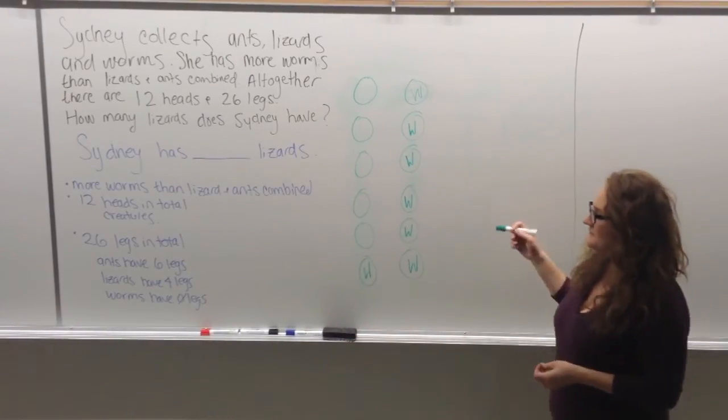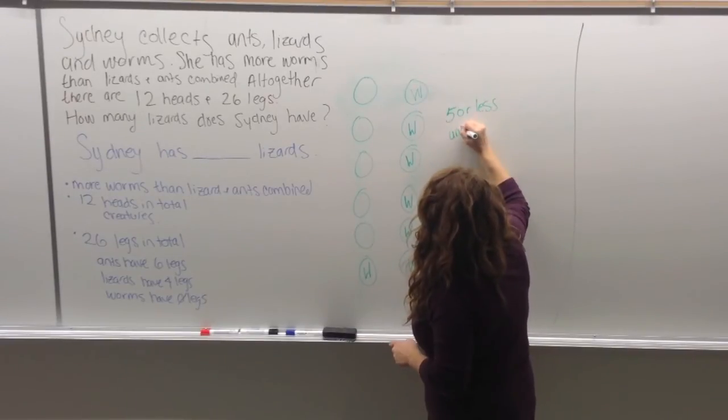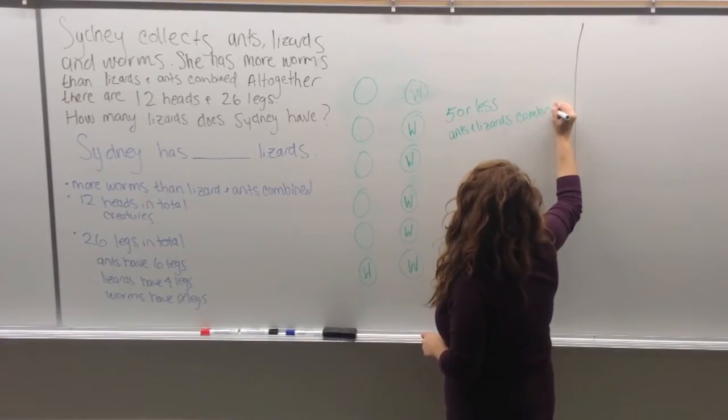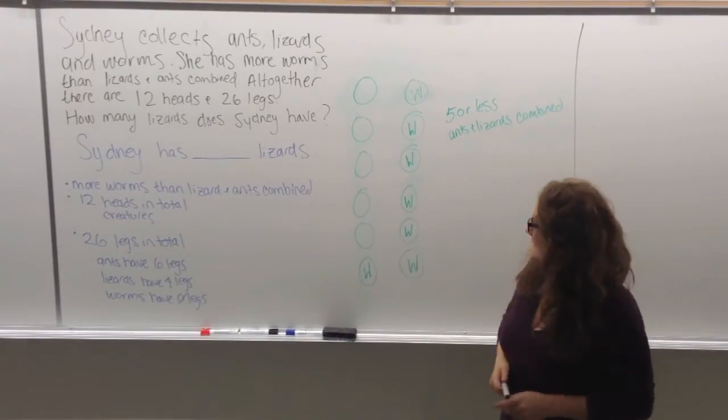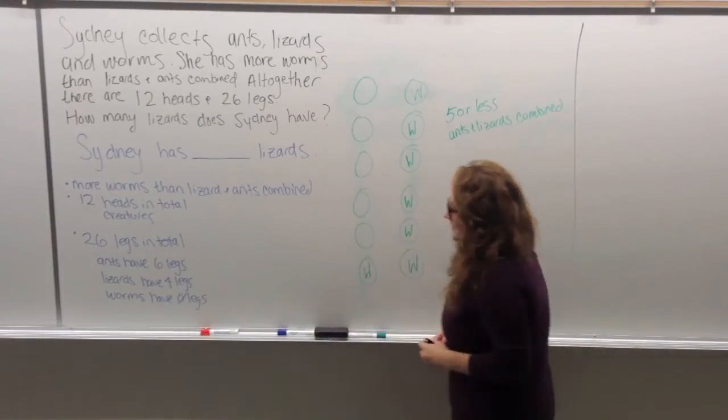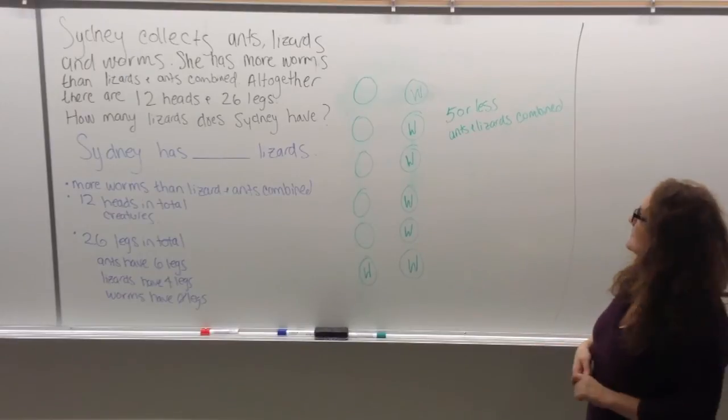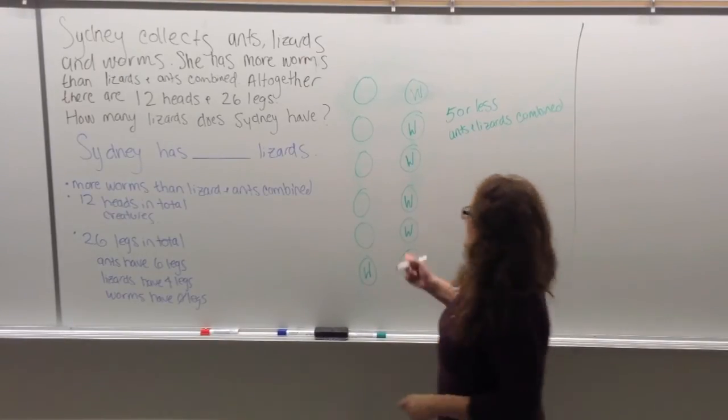So from that, we get that we have 5 or less ants and lizards combined. So next, we'll move on to what else we know. We know we have 26 legs in total. So, we also know that lizards have 4 legs and ants have 6. So if we had all lizards and we had 5 lizards, we would have the least amount of legs possible. So let's try that.